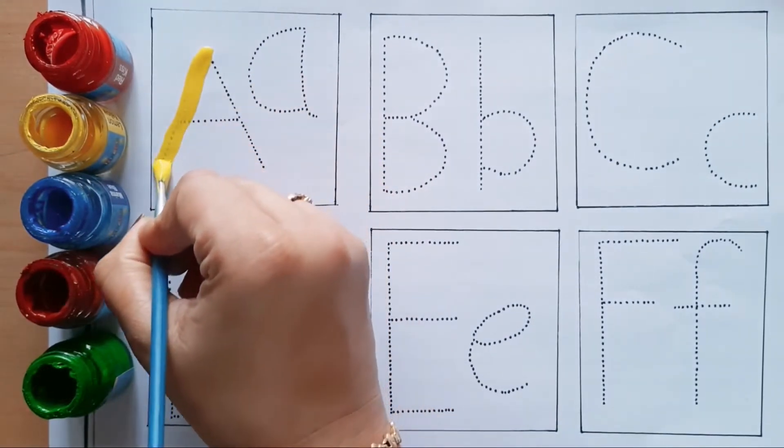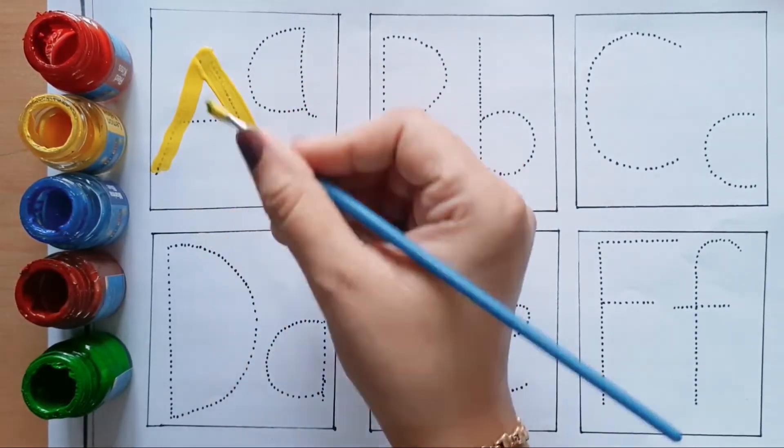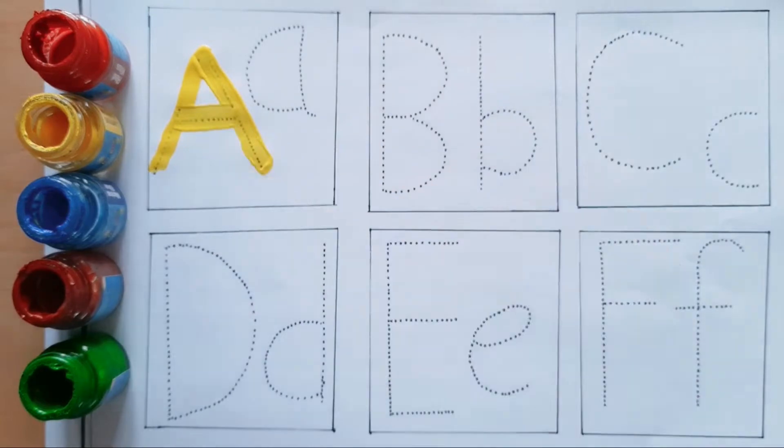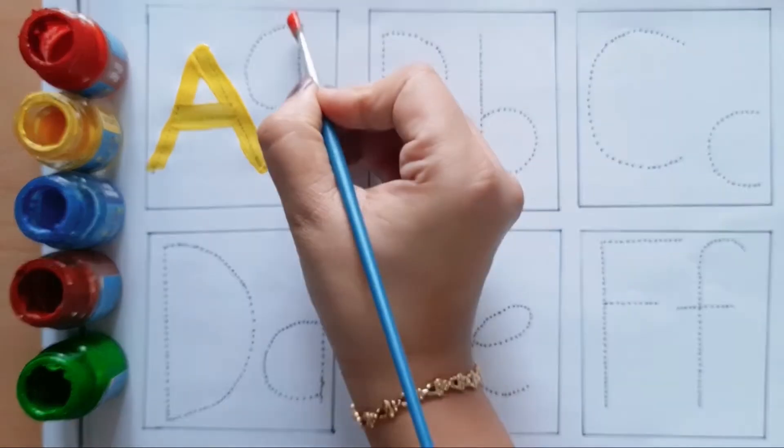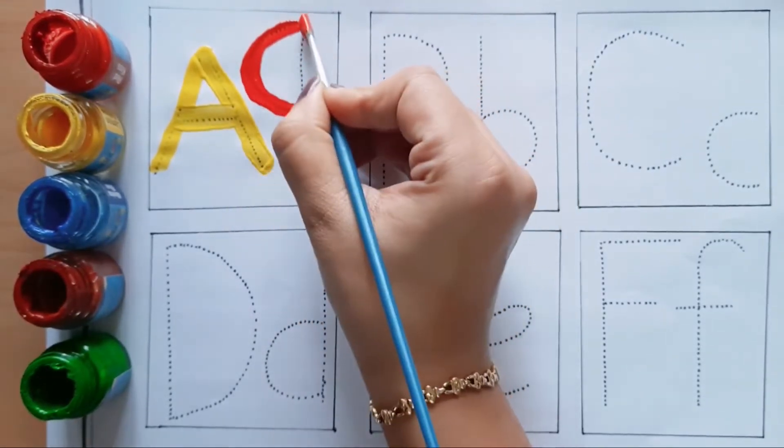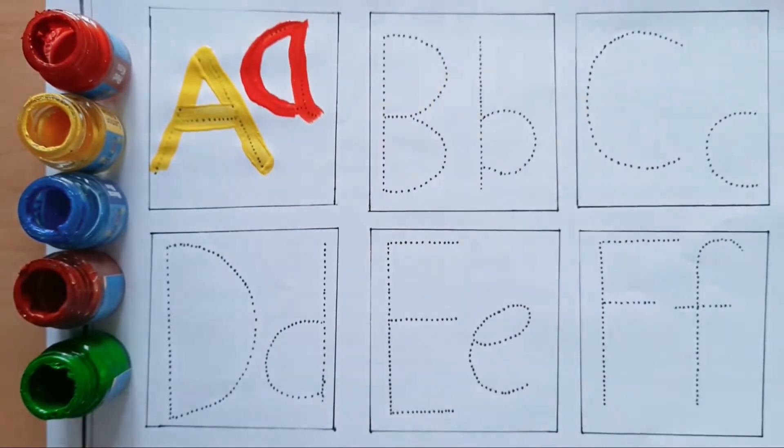Capital A, yellow color. A for Astronaut - Astronaut means Antarikshatri. Small a, red color. A for Address - Address means Pata.